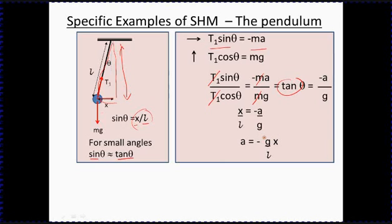I'm hoping by now you're looking at that and thinking, oh, that's simple harmonic motion. That is because, look, if the g over L is a constant for a given situation, then this is a is proportional to minus x, or a equals minus kx, where our k is the g over L.